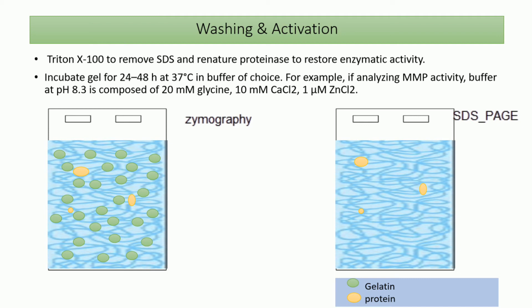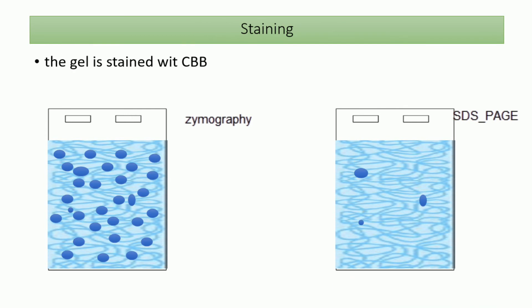After washing, the gel is incubated — this is known as the activation step. The activation buffer contains the molecules required to activate the protein of interest. In the case of MMPs (gelatinases), we use calcium chloride and zinc chloride in the activation buffer.